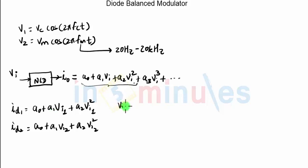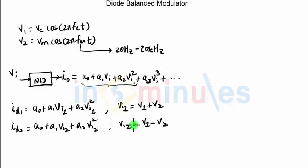Now what is my VI1? My VI1 is V1 plus V2 as we have seen in the circuit diagram and my VI2 is V1 minus V2. These are the inputs going to both the diodes.